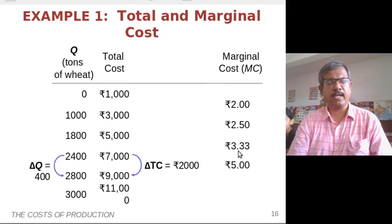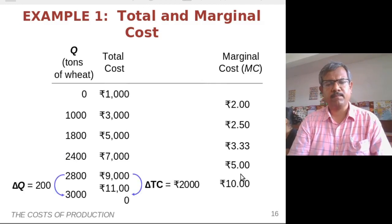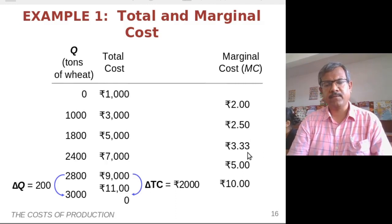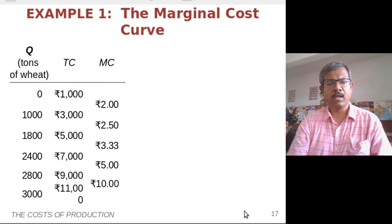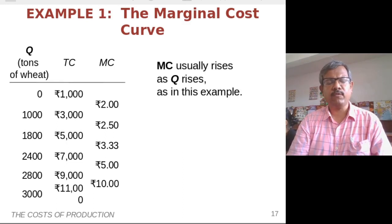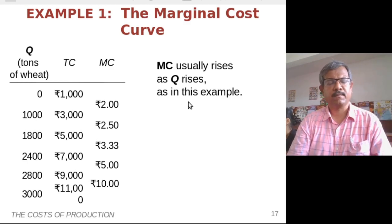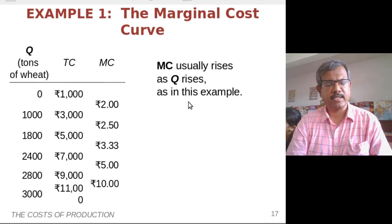Continuing to calculate for the next two stages, we see that the marginal cost increases to Rs. 5 and then Rs. 10. So initially the marginal cost rose from Rs. 2 to Rs. 2.50, then Rs. 3.33, and then it started rising almost exponentially — Rs. 3.33 became Rs. 5, and Rs. 5 doubled to Rs. 10, and this trend will continue. The key conclusion: marginal cost usually rises as Q rises.